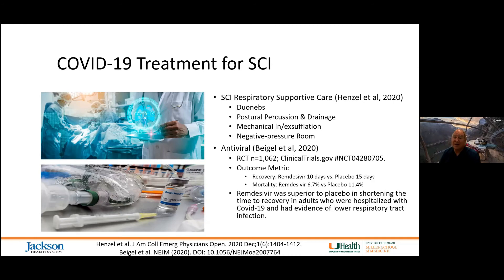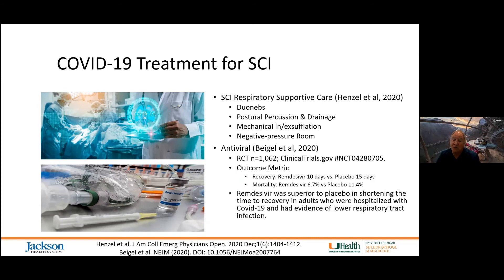What we recommended for persons with spinal cord injury was to continue using respiratory supportive care. For my folks with high spinal cord injury, I had written a prescription for a mechanical insufflator-exsufflator and duoneb machine, taught them postural percussion and drainage, with the recommendation to use these whenever they start to have increased secretions. If they show up to the emergency department it becomes problematic, as we generally don't have enough negative pressure rooms.